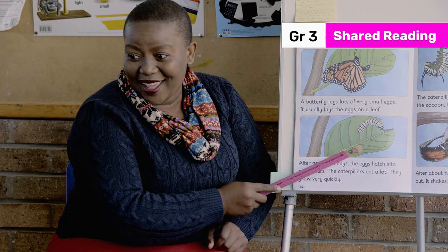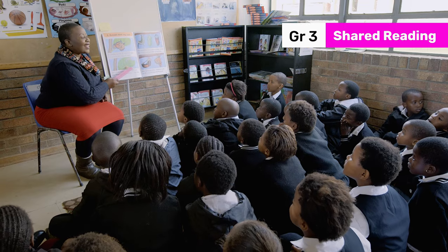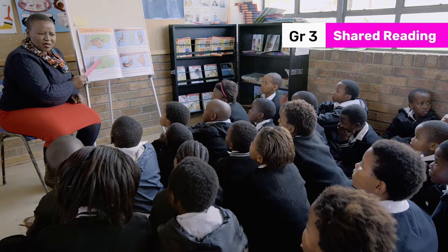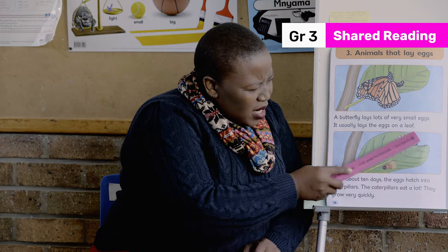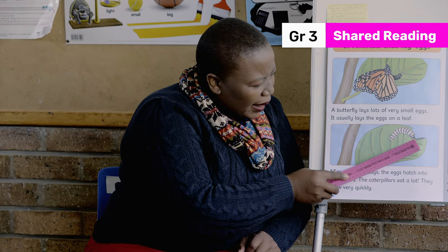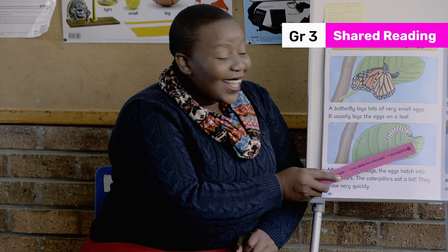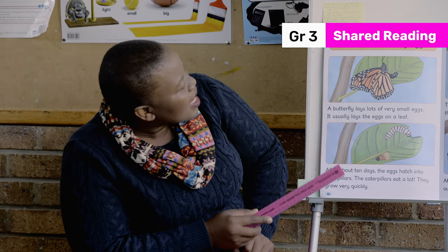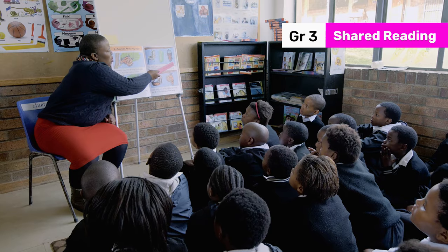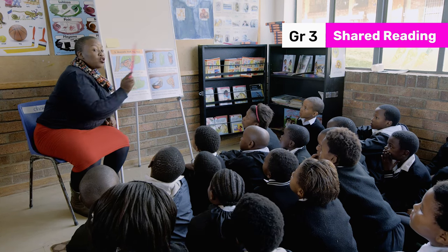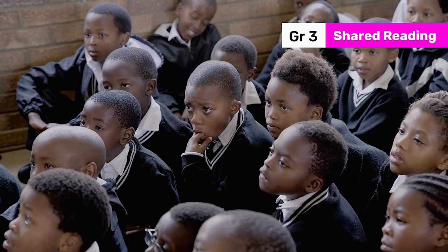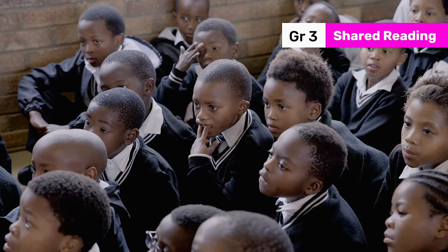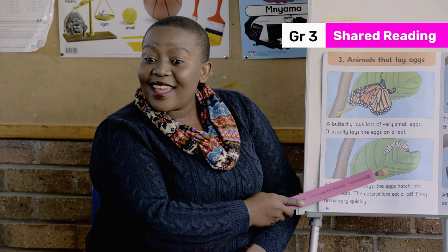What do we call the baby of a butterfly? It's a caterpillar. What is the caterpillar doing here? Eating — eating the leaves, nice. So first we started with the butterfly laying the eggs, and in this picture what's happening? The caterpillar is coming out of the egg.